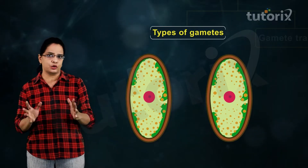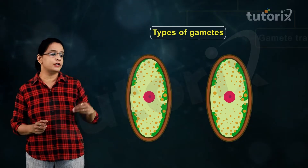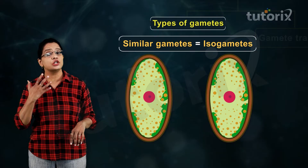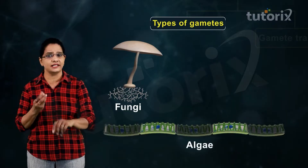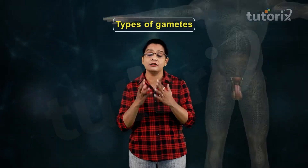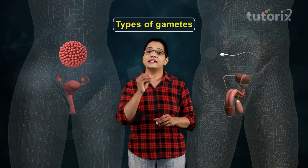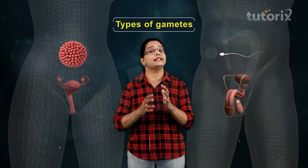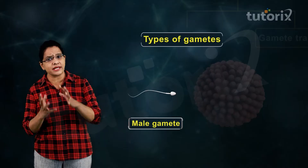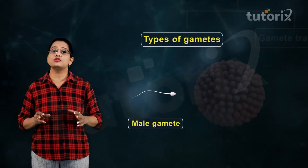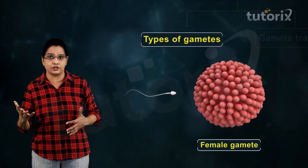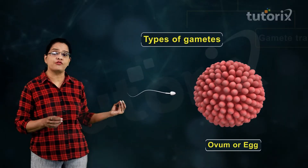Gametes can either be exactly similar to each other — in that case we cannot categorize them into male and female gametes, and such gametes are called isogametes, usually produced in certain fungi and algae. In most sexually reproducing organisms, gametes are not similar; they are called heterogametes. The male gamete is comparatively smaller, known as sperm or antherozoite, while the female gamete is larger, known as ovum or egg.